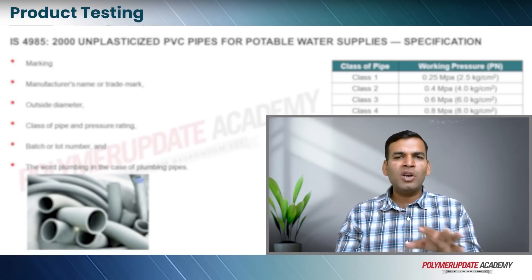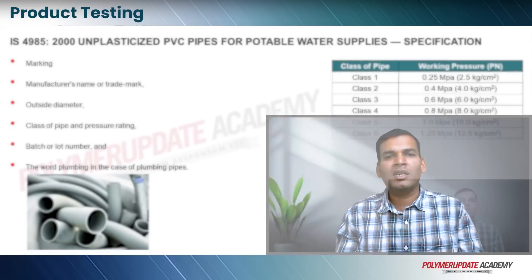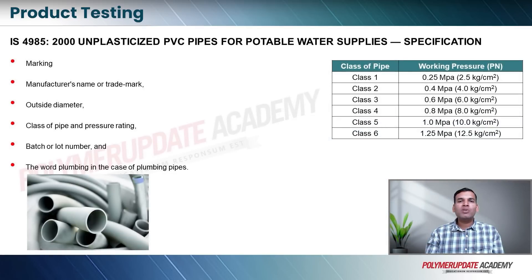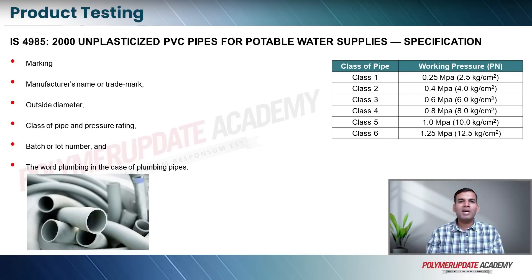If I want to market my material, which is unplasticized PVC pipe for drinking water supplies, what should I be testing for? You can go to any third-party laboratory and tell them ISO 4985-2000 — that is what you want to check. You don't need to give them anything else; they will check whatever is required. The only thing they require from your side is some material information before they make a declaration. The first thing that comes into the picture under ISO 4985-2000 is the marking. You can see four to five different points required as a mark on the pipe surface.